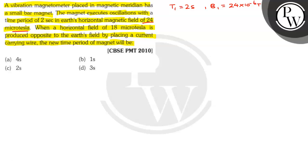Now we are told that when a horizontal field of 18 microtesla is produced opposite to the earth's field, that means B2 is given as 24 minus 18, that is 6 microtesla, so 6 microtesla means 6 into 10 to the power minus 6. The new time period?